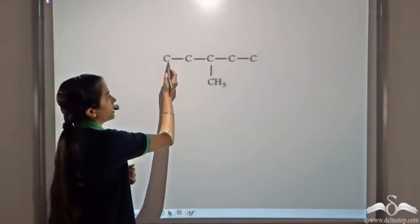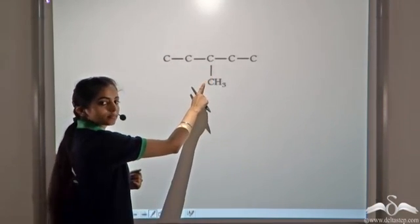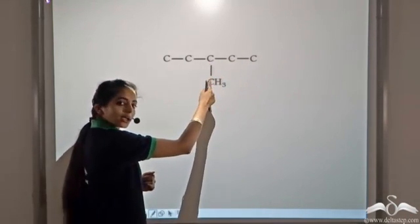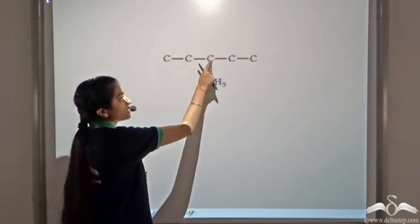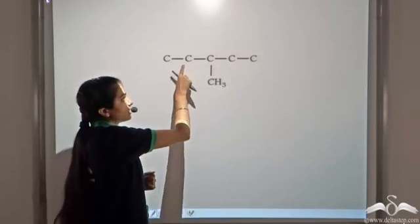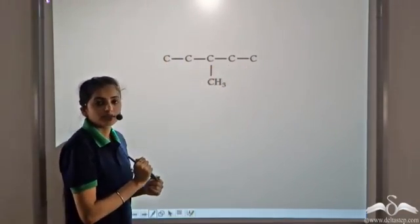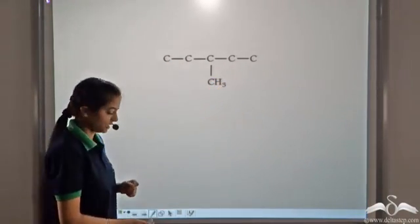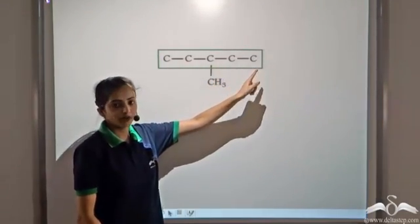Let's count the chains. If we take one chain, we get 4 carbon atoms. If we take another chain, we again get 4 carbon atoms. But if we take this chain, we get 5 carbon atoms. Here we had 4, here we had 4, and in this chain we got 5 carbon atoms. So we should take this chain since we are looking for the longest carbon chain — our longest chain contains 5 carbon atoms.